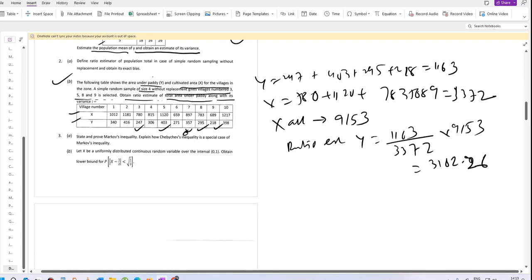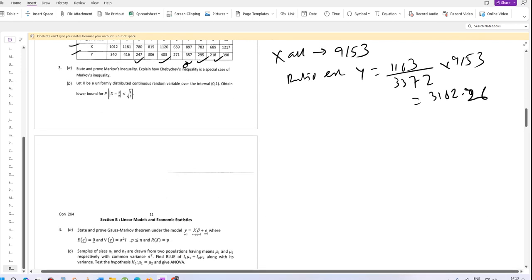Step 2 is calculation of the variance. The formula is 1 by n times the sum of square deviations, where n equals the sample value, which is 4. The deviation is Y by X minus the ratio estimate.